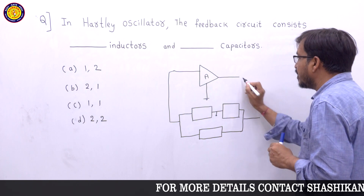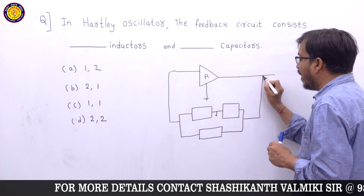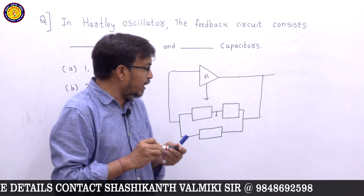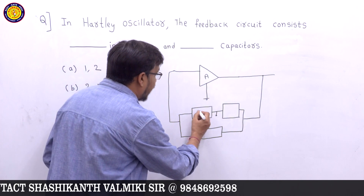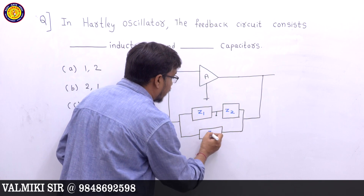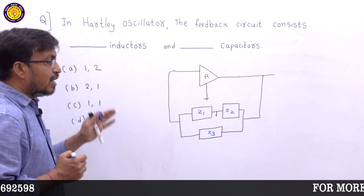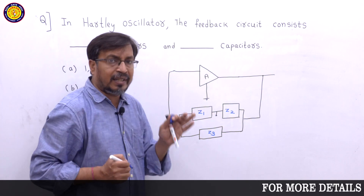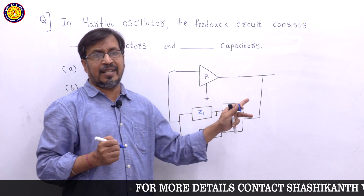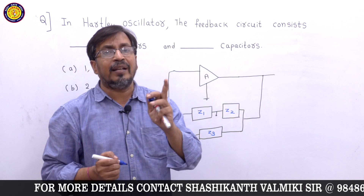In oscillators, positive feedback is used with a common emitter amplifier. The feedback circuit has three elements: Z1, Z2, and Z3. If Z1 and Z2 are inductors and Z3 is a capacitor, then it is a Hartley oscillator.